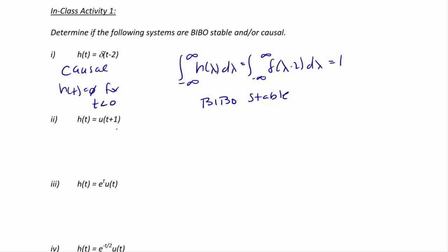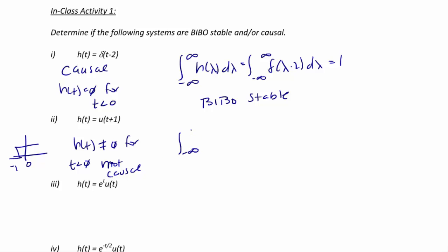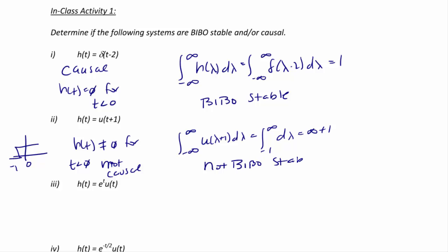What about h(t) equals u(t plus 1)? This is a step function that turns on at negative 1. Since h(t) is not equal to zero for t less than zero, this system is not causal. The integral from negative infinity to positive infinity of u(lambda plus 1) d-lambda equals the integral from negative 1 to infinity d-lambda, which is infinity. So because this is not finite and grows without bound, this system is also not BIBO stable.